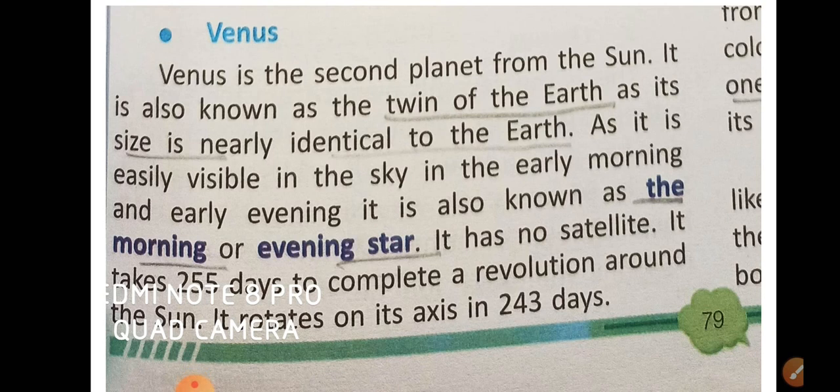Venus takes 255 days to complete a revolution around the sun and rotates on its axis in 243 days. Mercury takes 88 days to complete one revolution around the sun.